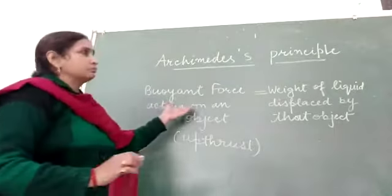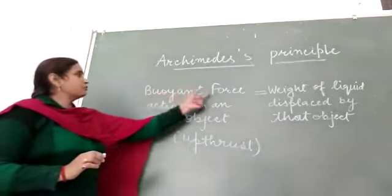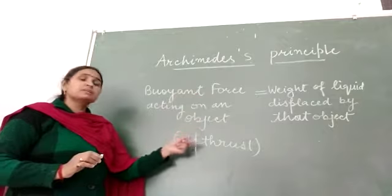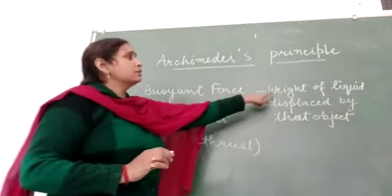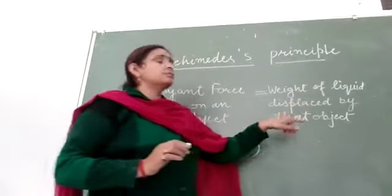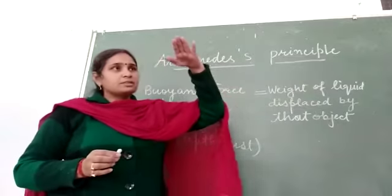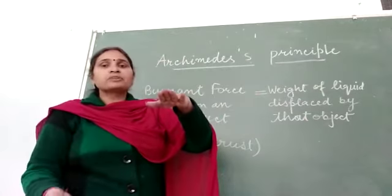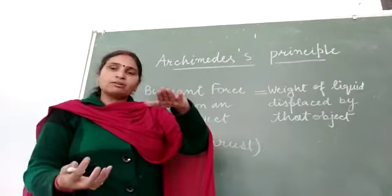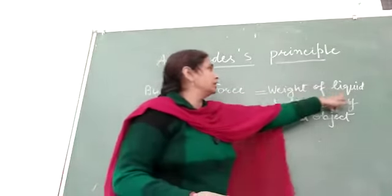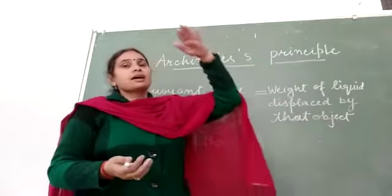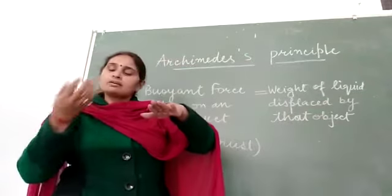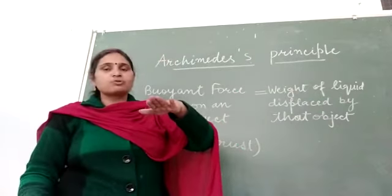As per Archimedes principle, buoyant force acting on an object, this upthrust, has to equal the weight of liquid displaced by that object. Means how much the object is placed inside, the water will come outside. The weight of the liquid displaced by that object - as the object moves inside, water moves outside.